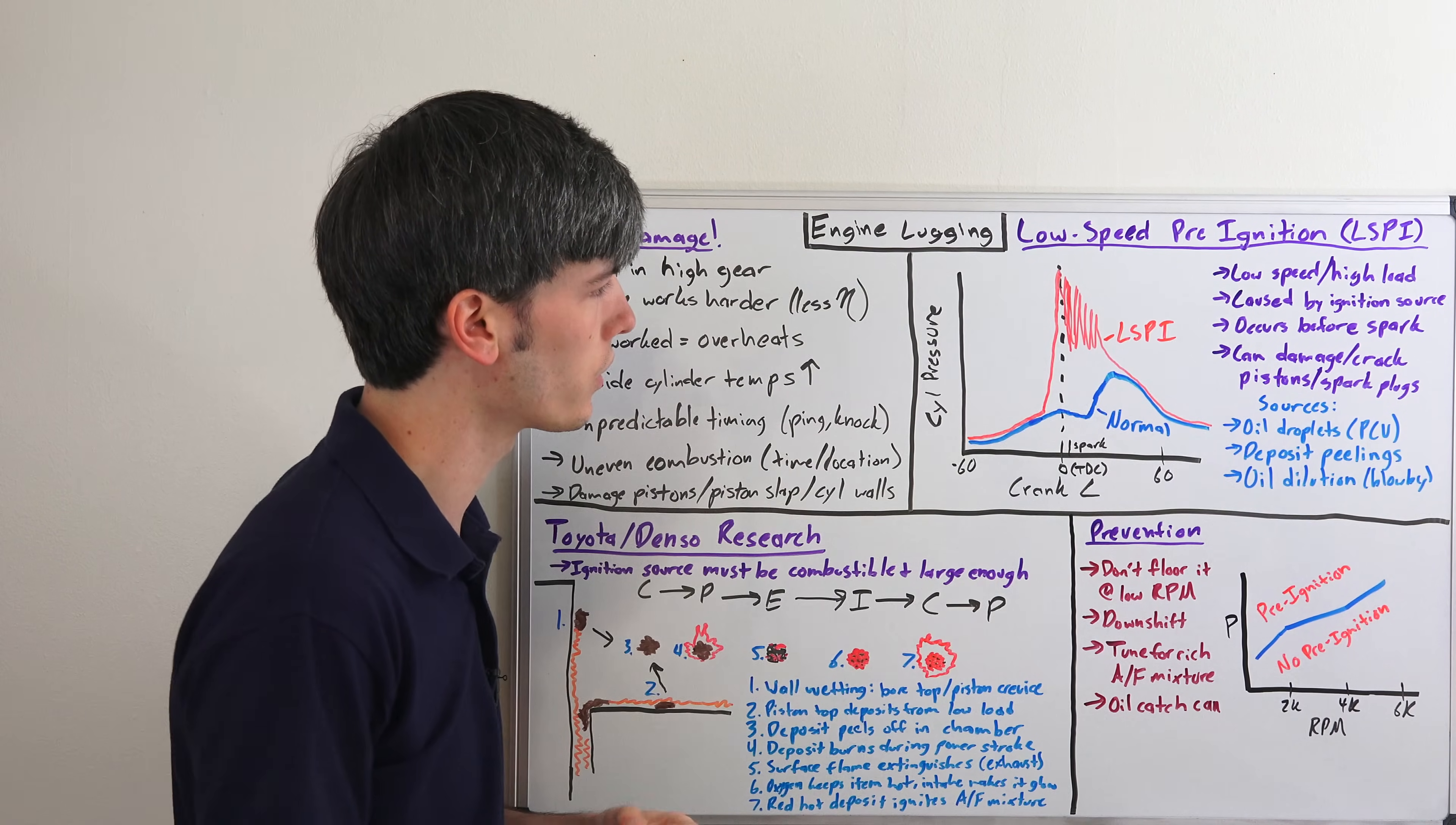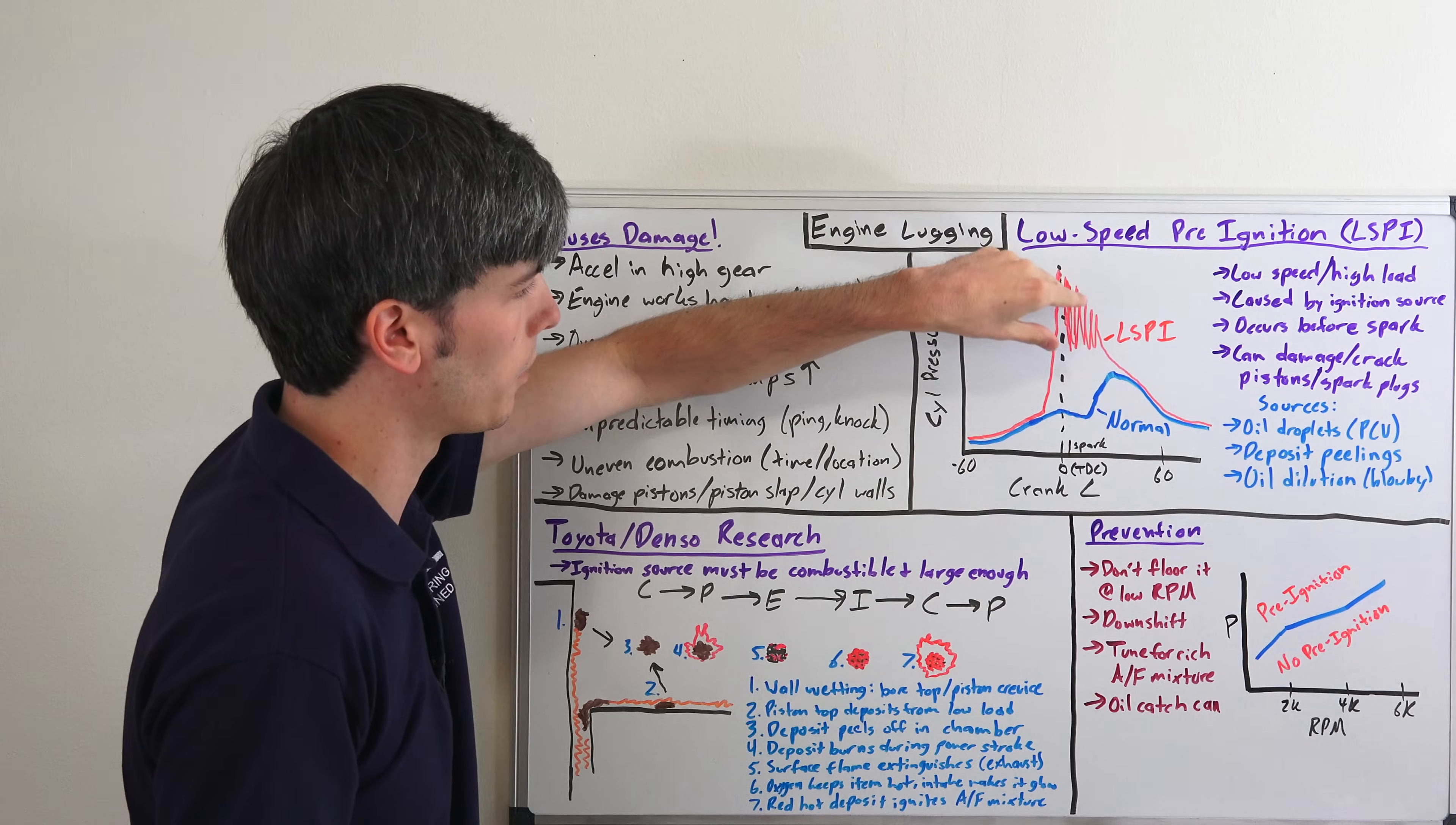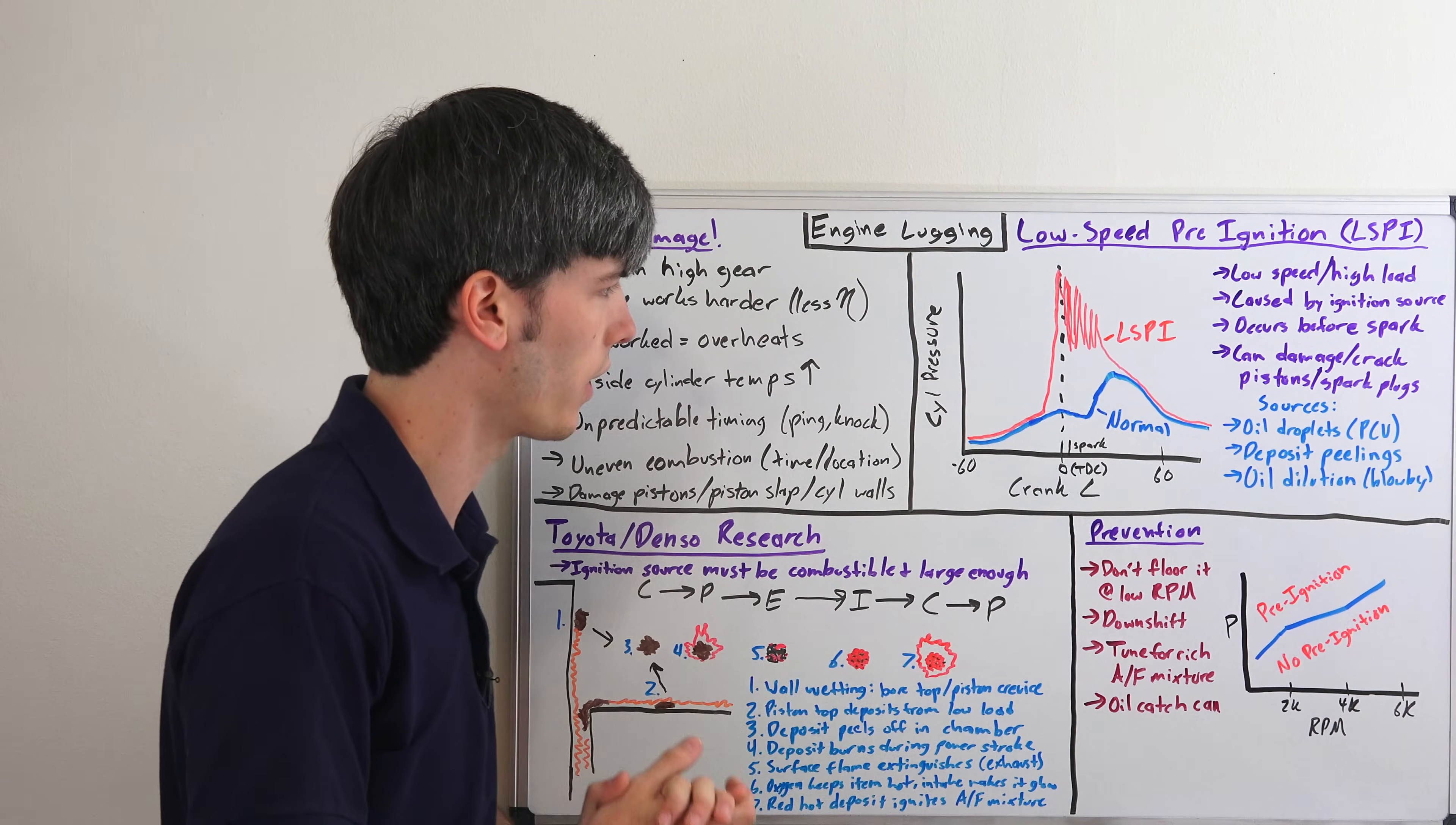With low speed pre-ignition however, this of course occurs before the spark. You have this peak in pressure and it's kind of this erratic pressure that occurs much higher than normal, and so that can seriously damage your engine. That's what it looks like from a pressure standpoint versus where your crank angle is at.